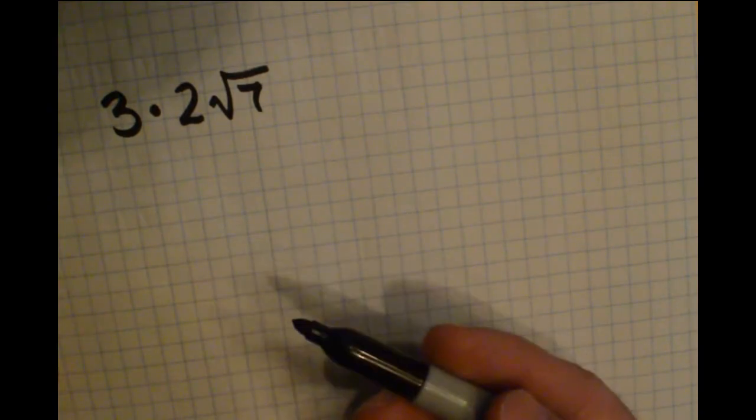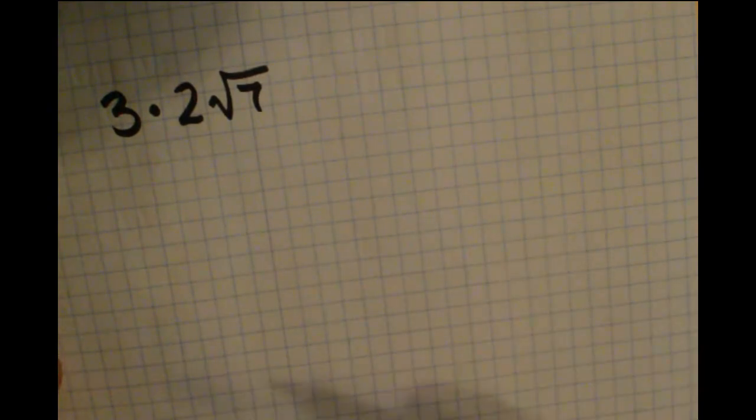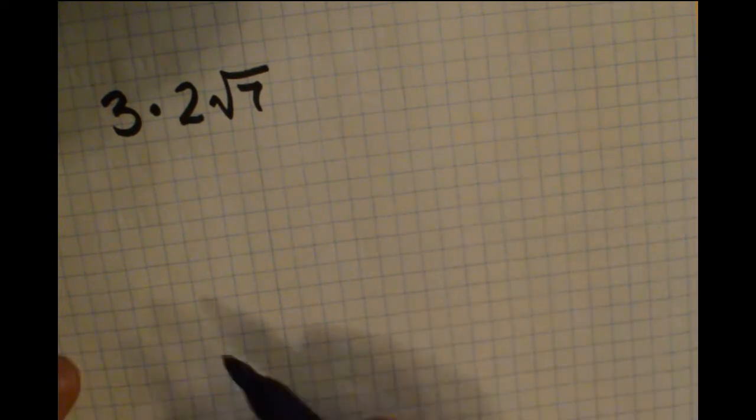If you're multiplying two terms that involve radicals, you can multiply coefficients together, which are numbers outside the radical, and you can multiply radicands together, which are the numbers inside the radical.